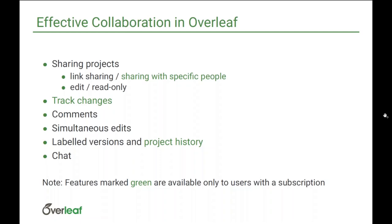A very useful feature when collaborating on Overleaf is that you can label specific versions in time and then get back to those versions or compare versions — for instance, the current version against an older version. If you have a subscription, you can see all the history, not just the labeled versions, but basically any version the project was in throughout its history. Last but not least, we have chat, which allows you to chat with your collaborators about any topics.